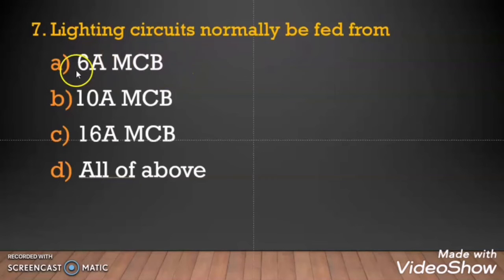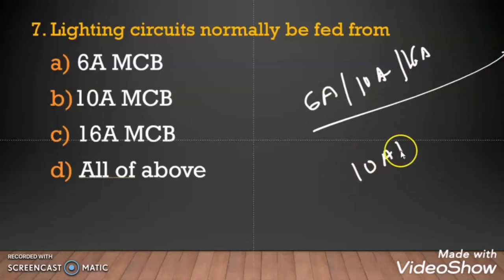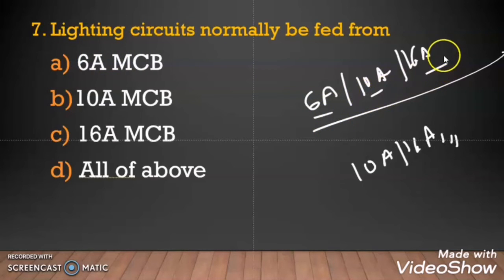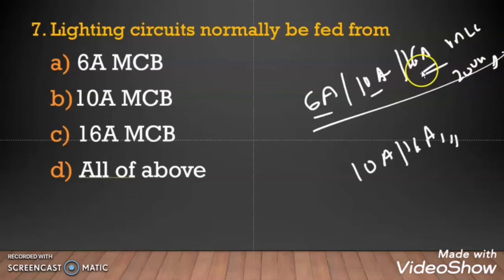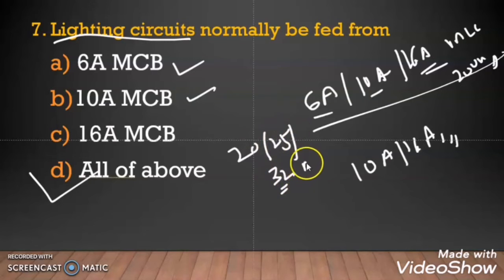Question 7: The lighting circuit shall normally be fed from a 6 ampere MCB, 10 ampere MCB, 16 ampere MCB, or all of the above? As per ADDC regulation, the lighting circuit can be fed from 6 ampere, 10 ampere, and 16 ampere MCB based on the load. If the load is less, go for 6 ampere; if medium, go for 10 ampere; if around 200 watts, go for 16 ampere. So the right answer is all of them. For power circuits, 20, 25, and 32 ampere MCB can be used based on the load.